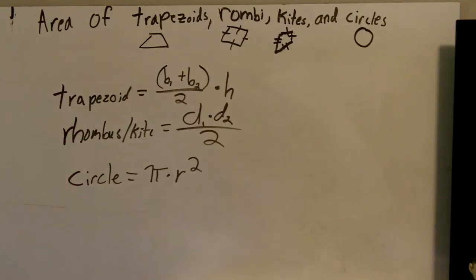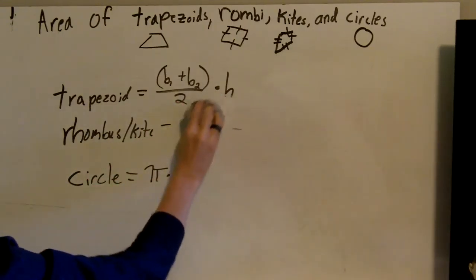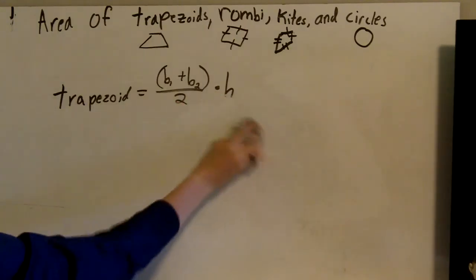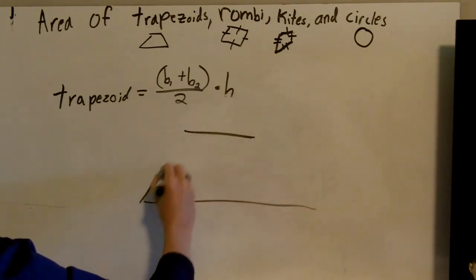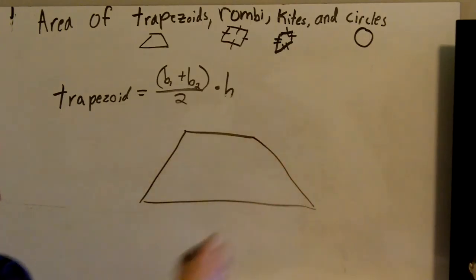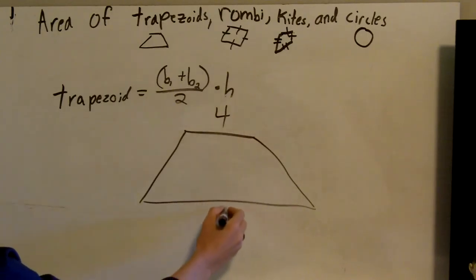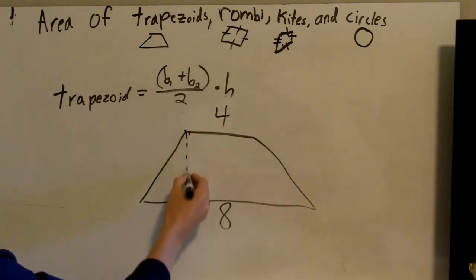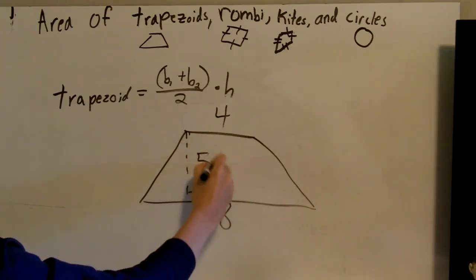So let's start with our trapezoid. For a trapezoid, you'll be given something like this. First thing you need to identify is which are the parallel sides, the top and the bottom right here. Let's say this is four and this is eight. And then we need our height. So you'll usually be given that. And let's say that is five, just to make it so that we have different numbers.